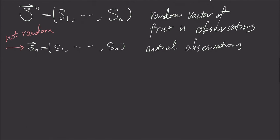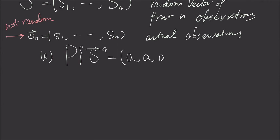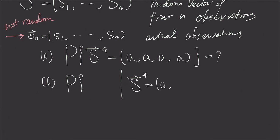The first question is asking: given S superscript 4, what is the probability that all 4 products are acceptable? The second question is asking: given that the first three products have acceptable quality, what is the probability that at the third time step, the production process is in the good state?